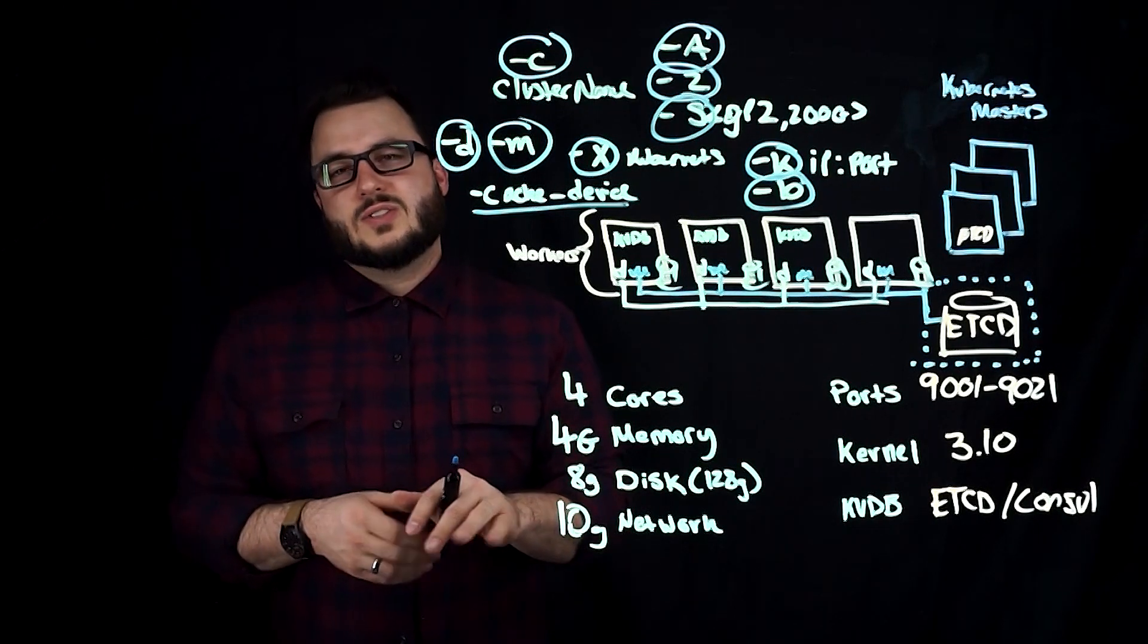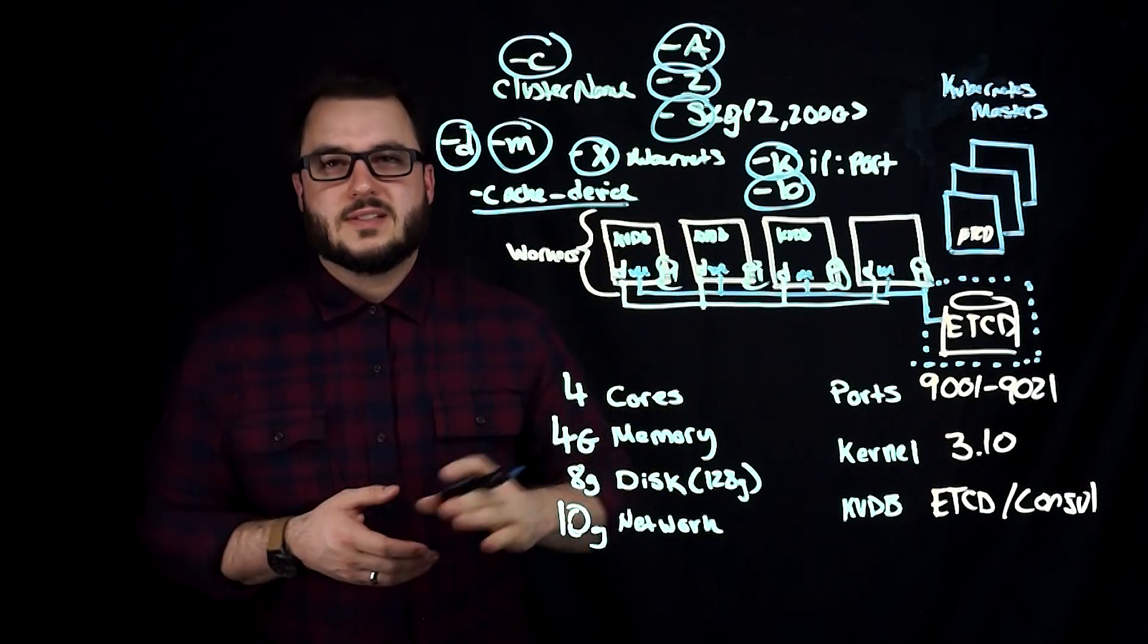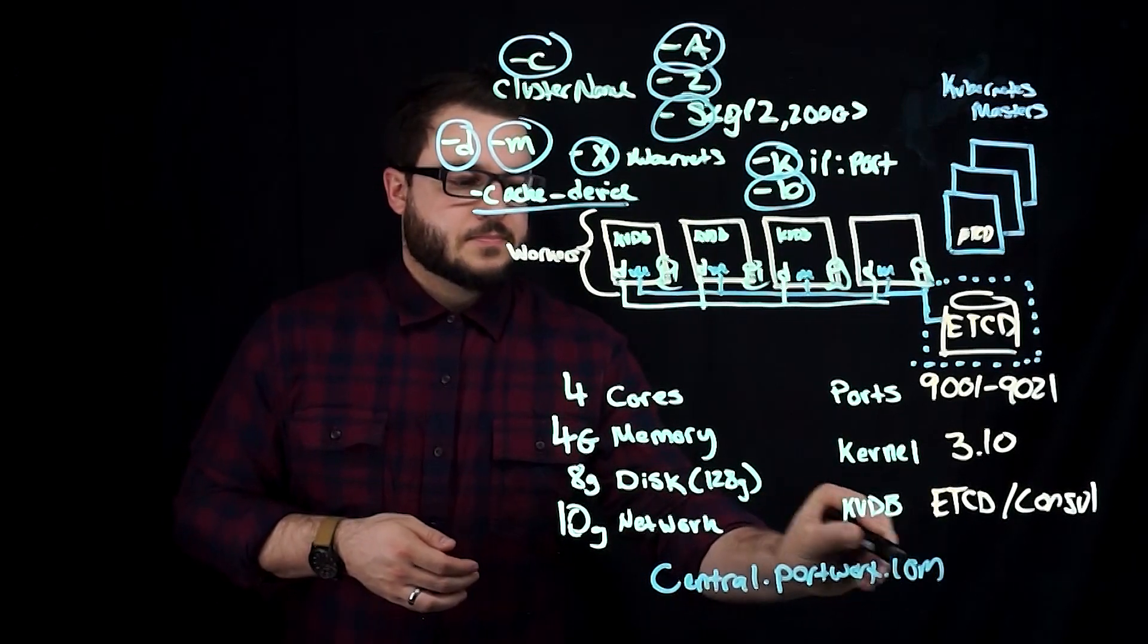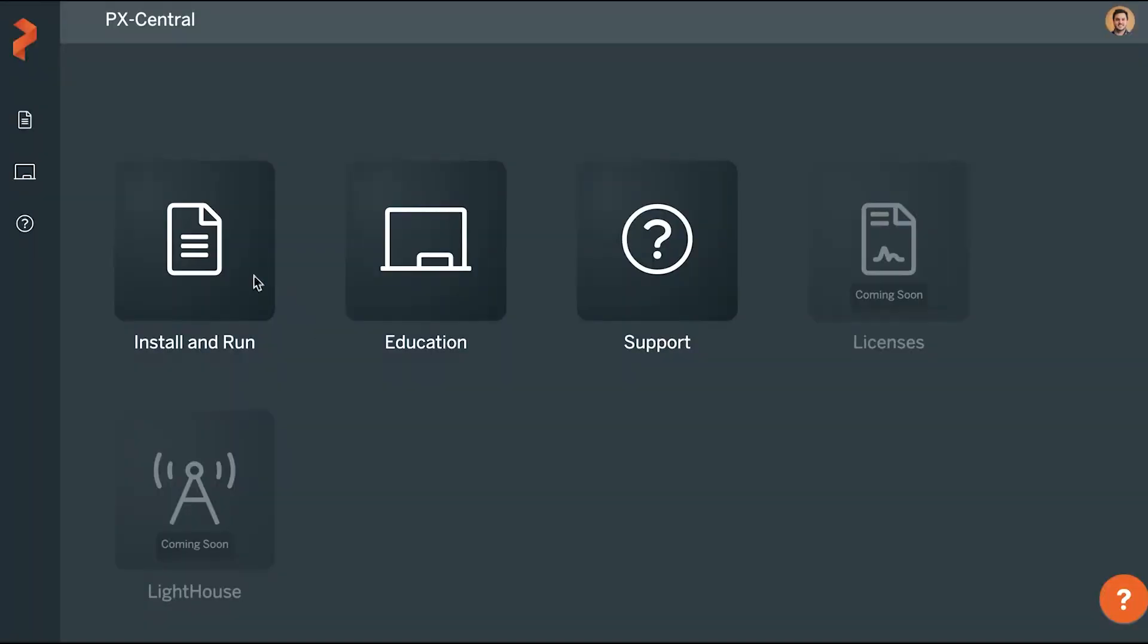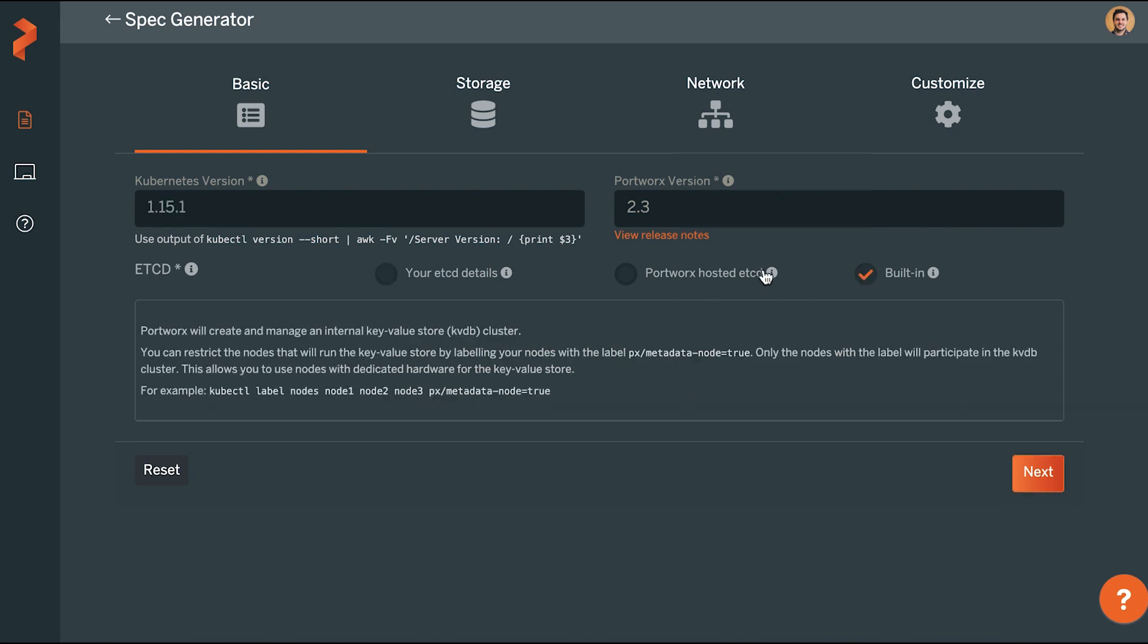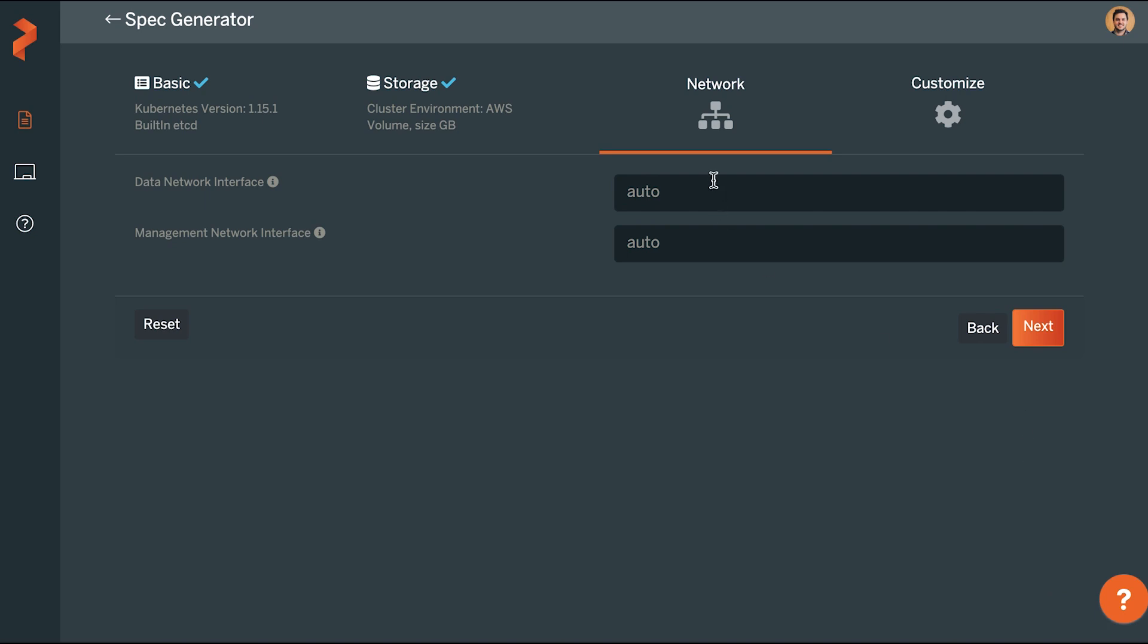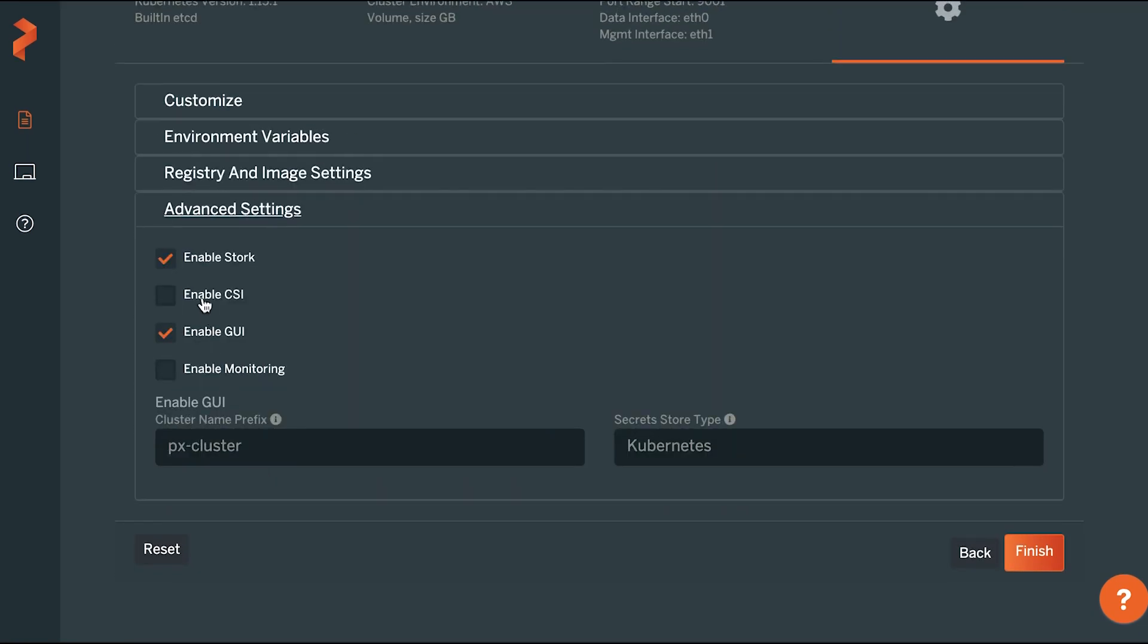Don't be concerned about how you're going to keep track of all these options. We have something called the spec generator, and you can access this at central.portworx.com. If you head there, I'll show on the screen what this looks like. If you go through the spec generator, it will automatically configure or allow you to select these options in a graphical way. As I'm talking through this, I'll probably put a video of how this looks. This should give you an idea of what you should think about when configuring your Portworx storage cluster.